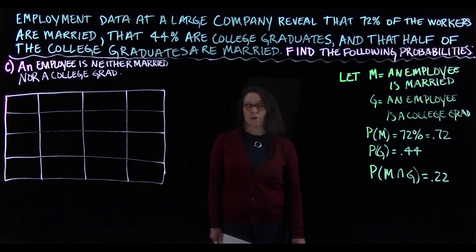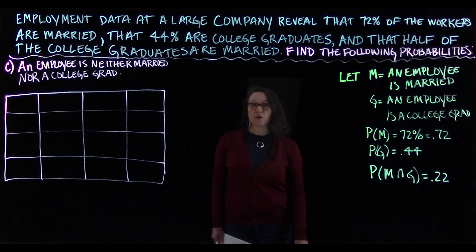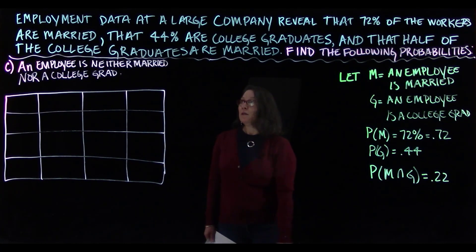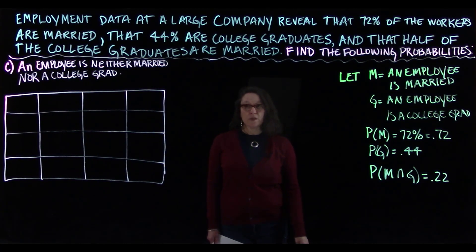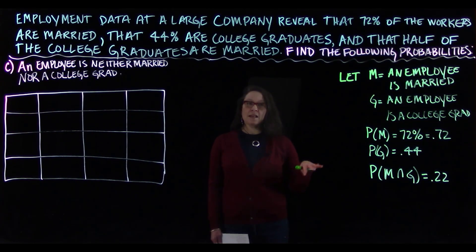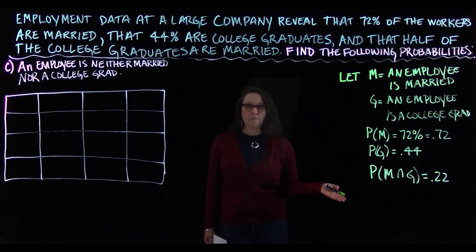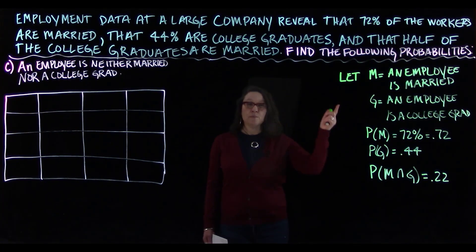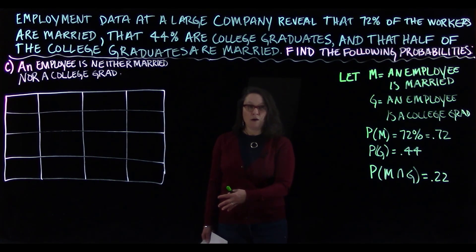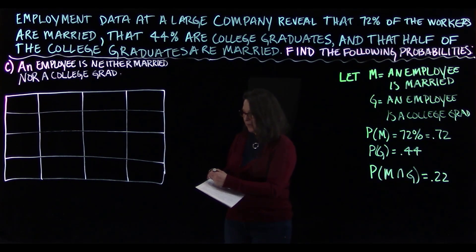We're on to part C: we need to determine the probability that an employee is neither married nor a college grad. 'Neither married nor a college grad' is the union of not being either of those things. Since we weren't given the probabilities of the complements directly, it may be easiest to build a contingency table and read those values off.